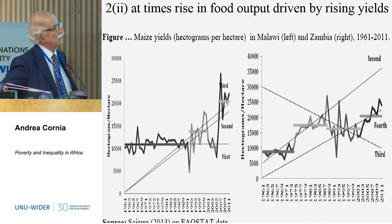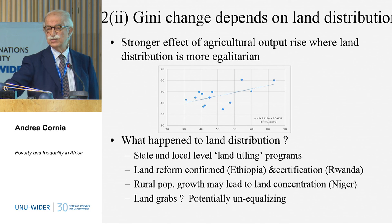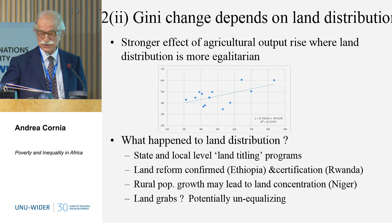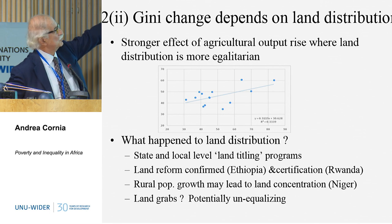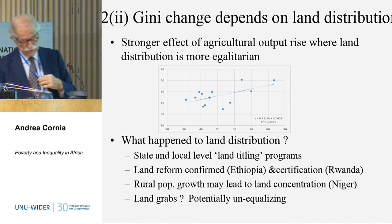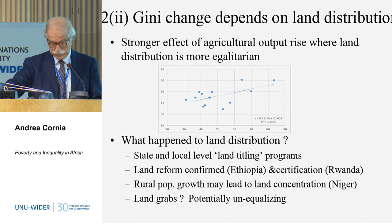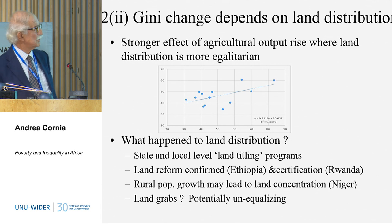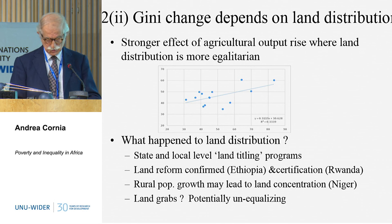The pattern of growth in agriculture is central to inequality in Africa. First, it depends on land distribution — and this chart confirms that in Africa, land Gini, inequality Gini, and income or consumption Gini are correlated. There are land titling programs and a drastic land reform in Ethiopia in 1975 that has been confirmed. But there has also been a very fast increase in land concentration due to population growth in rural areas, where the land frontier is exhausted. And there are issues of land grabs, which can be disequalizing.